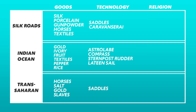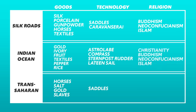In terms of religion, it'll be important to know which religions traveled along these routes. Along the Silk Roads, Buddhists brought their religion from South Asia to East and Southeast Asia. Neo-Confucianism traveled from China to Japan, Korea, and Vietnam. And Islam traveled from Southwest Asia to South Asia. Along the Indian Ocean routes, you've got those same religions plus Christianity from the Mediterranean basin. And along the Trans-Saharan routes, it was mostly Islam traveling from Southwest Asia and North Africa down into Sub-Saharan Africa.